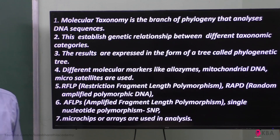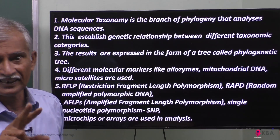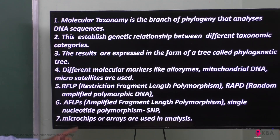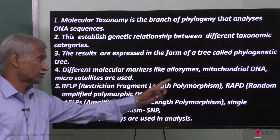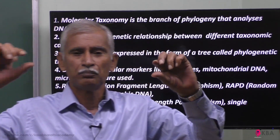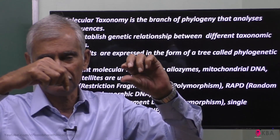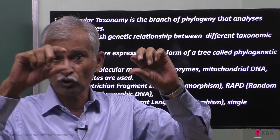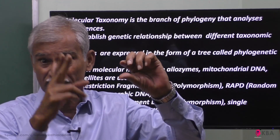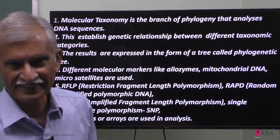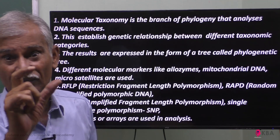Various methods are used to analyze DNA sequences and match them correctly. One such method is RFLP — Restriction Fragment Length Polymorphism. In this method, restriction enzymes are used to cut the chromosome at specific sequences. The length of the resulting fragments differs based on sequence changes, and this length difference is analyzed for classification.